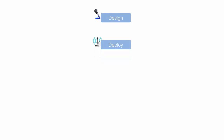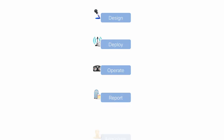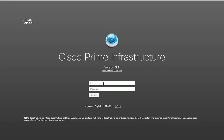The different stages of the lifecycle approach are design, deploy, operate, report, and administer. The Cisco Prime Infrastructure web interface is organized according to the lifecycle workflow that we just talked about.